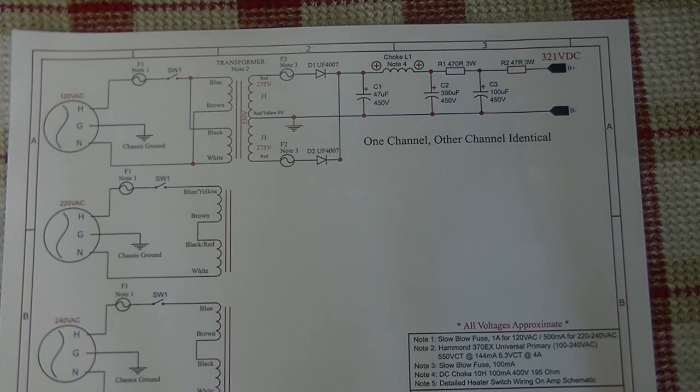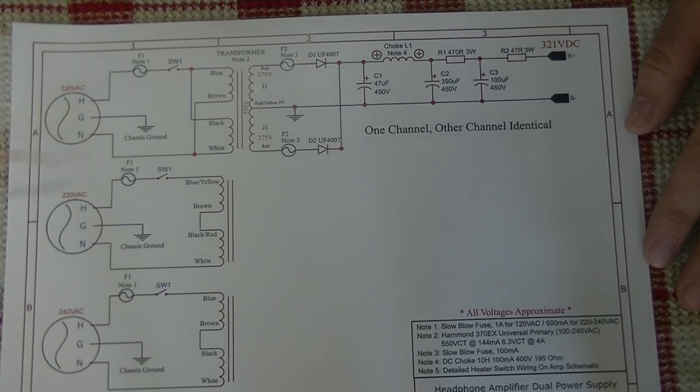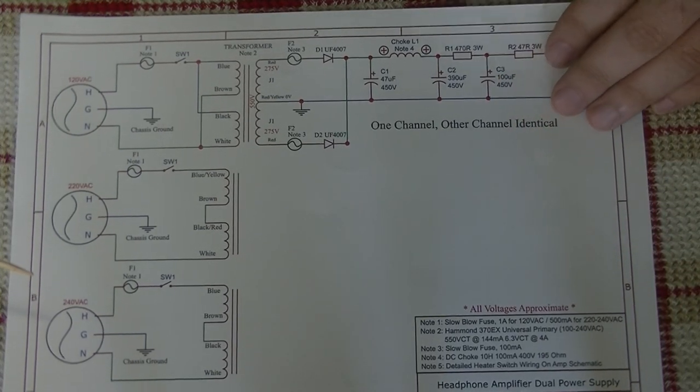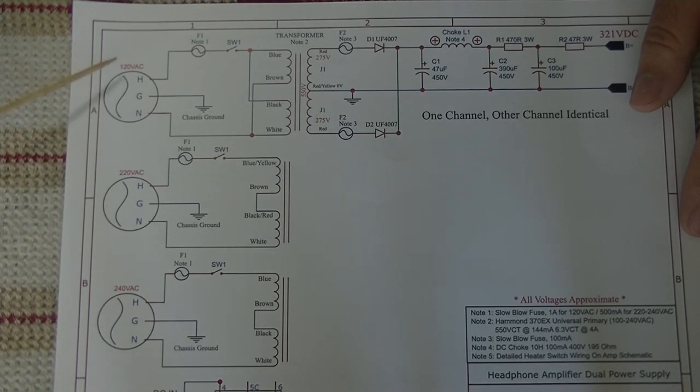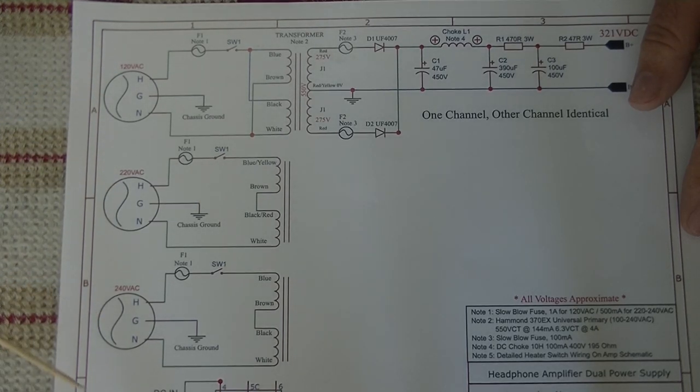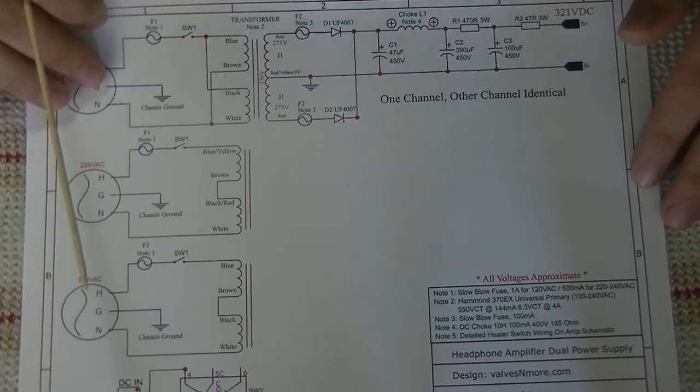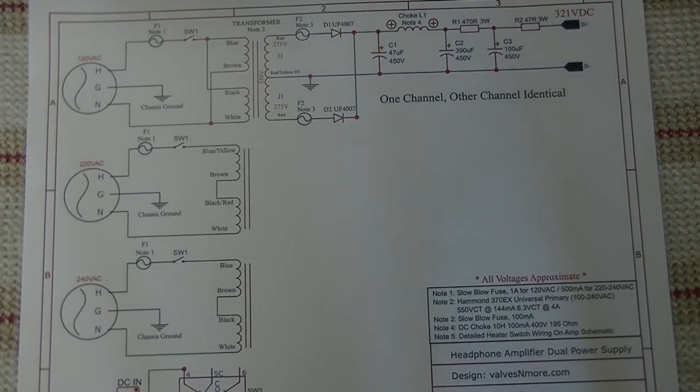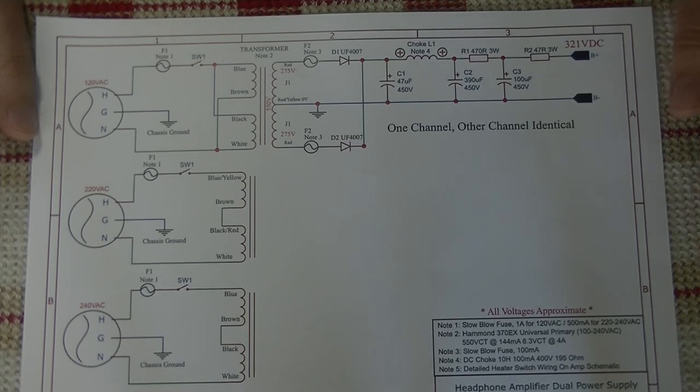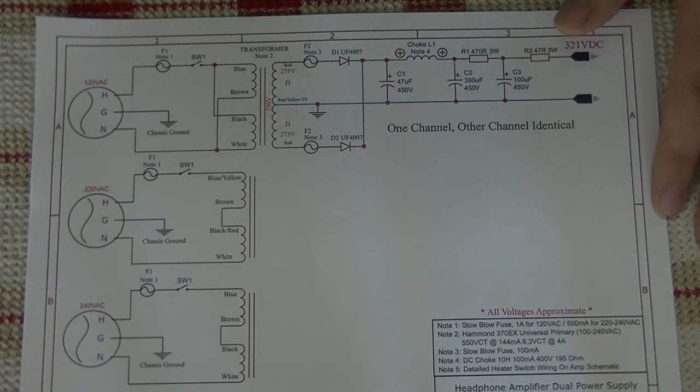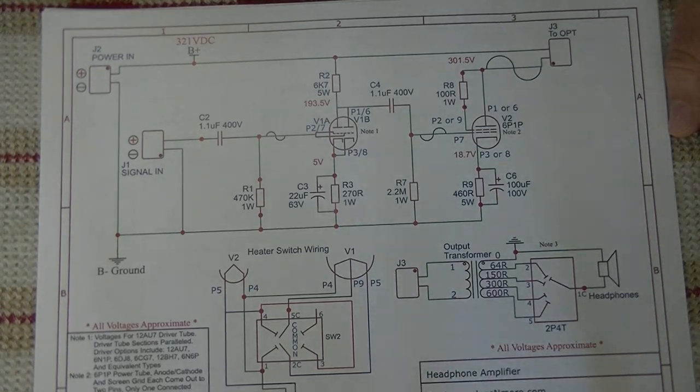One thing to note here is the power transformer is another universal one. We like to use these universal transformers. That means it's going to work on all the different mains voltages that you can get around the world—standard 120, 220, 240. It's just going to require slightly different wiring in the final kit, but it's going to be easy to do. The other thing to remember is that all of this is subject to change. We're still actively developing this thing. It's not finalized, although I'd say it's very, very close to it. So let's bring in the main amplifier schematic now.